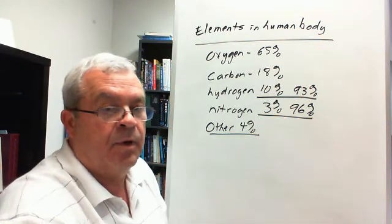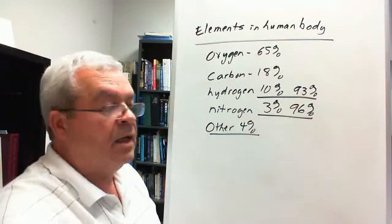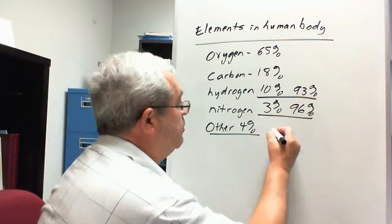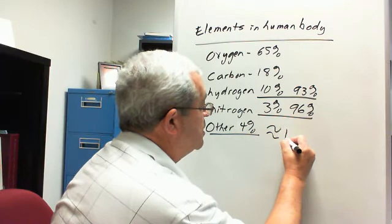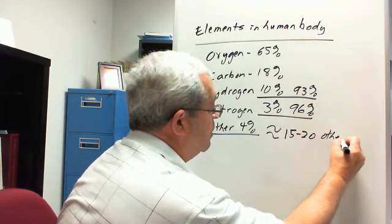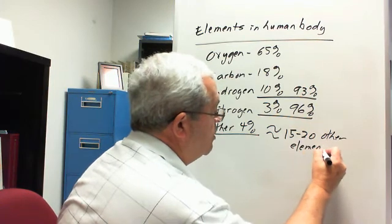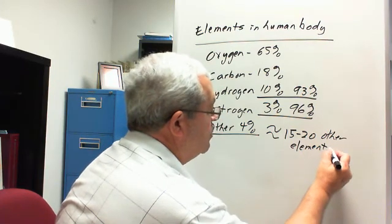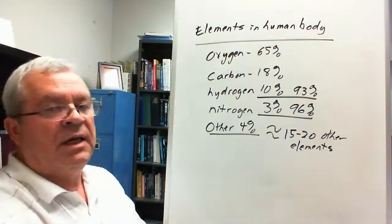Well, I counted them earlier, that's about 16, and so the other 4%, we can say this, is approximately 15 to 20 other elements, obviously in small amounts, and we'll see in some cases why we need those.